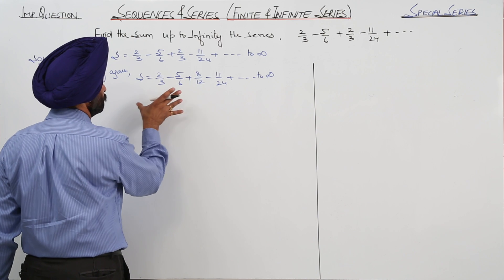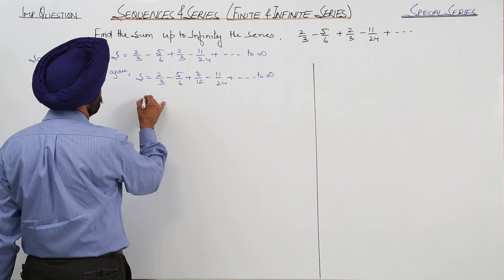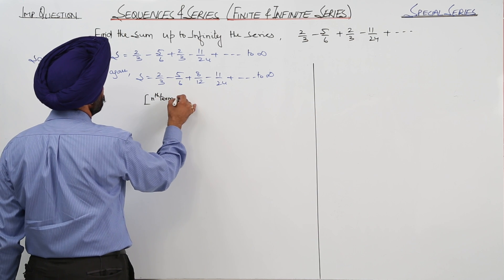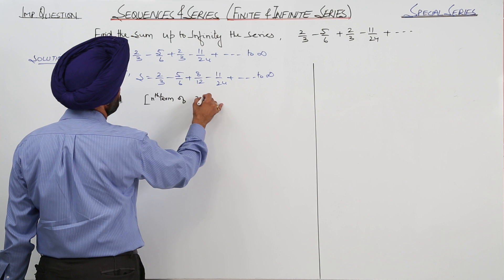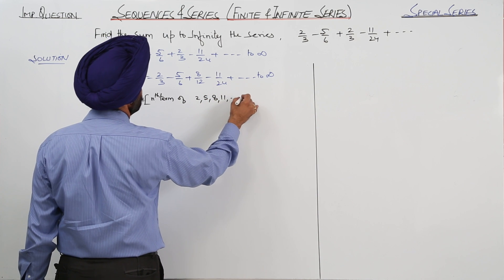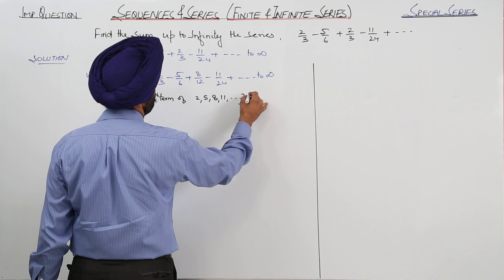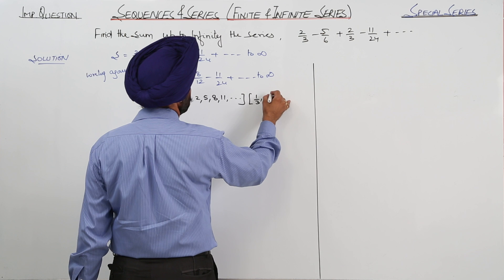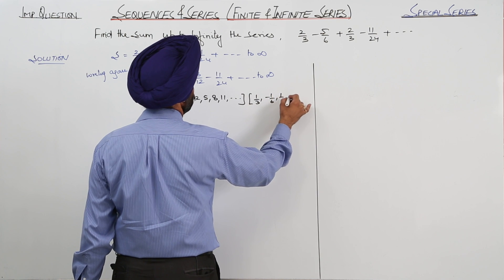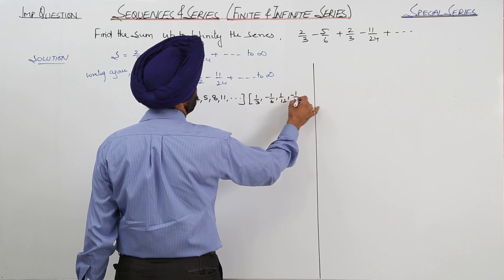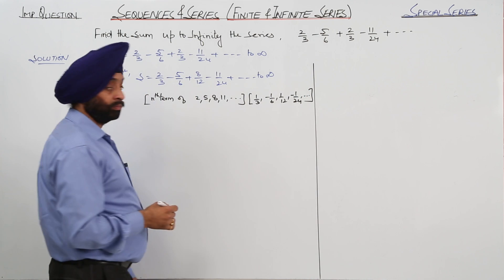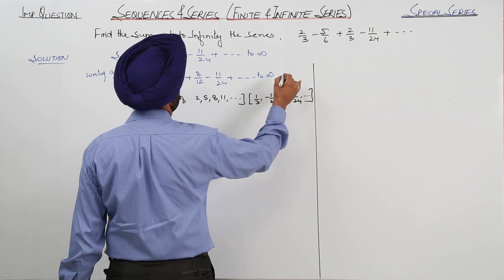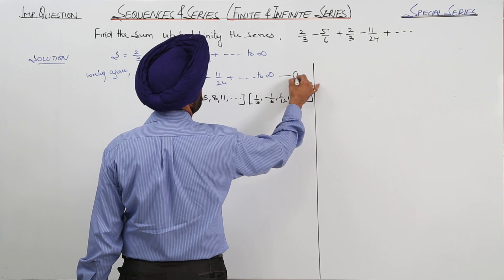We can just write this as now nth term of 2, 5, 8, 11 like this, with 1 by 3, negative of 1 by 6, 1 by 12, negative of 1 by 24 like this. Is it clear? So now let this be equation number 1.